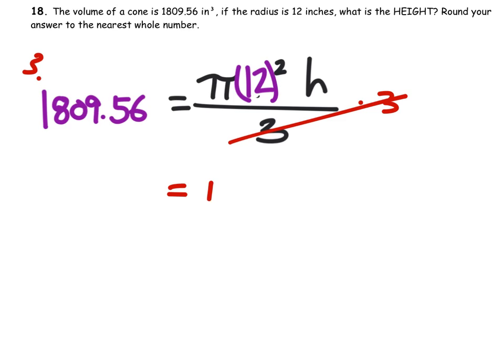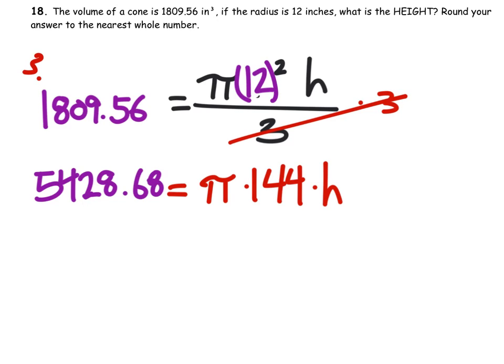What that does is it cancels out the threes and we get π, 12 squared is 144 times the height, like this. So what's three times the volume there? So if it were a cylinder, that's what we would have.